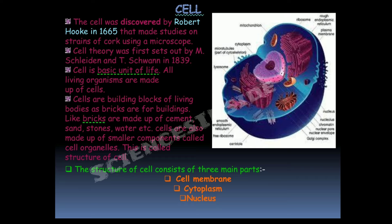Cells are the building blocks of living bodies, just as bricks are for buildings. Like bricks made of cement, sand, stones, and water, cells are also made up of smaller components called organelles. The cell consists of three main parts: cell membrane, cytoplasm, and nucleus.